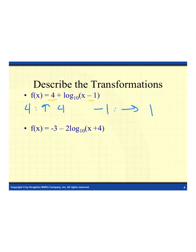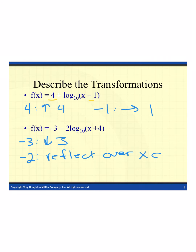For our second function, we have a lot of things going on. We have a negative 3, which takes the whole function down 3. We also have a negative 2, which reflects everything over the x-axis. And last but not least, we have a positive 4 associated with our x-value — it's a horizontal transformation, so we go to the left 4 units.